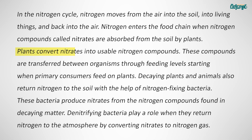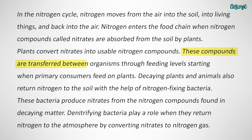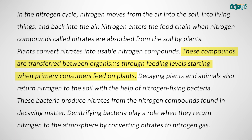Plants convert nitrates into usable nitrogen compounds. These compounds are transferred between organisms through feeding levels, starting when primary consumers feed on plants.